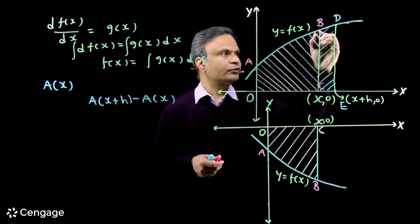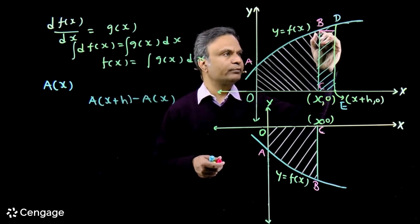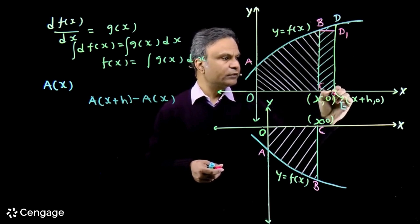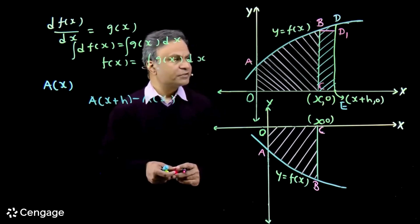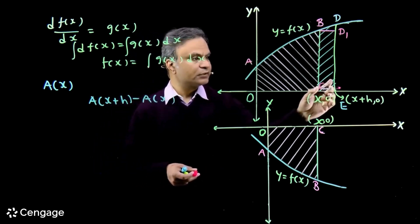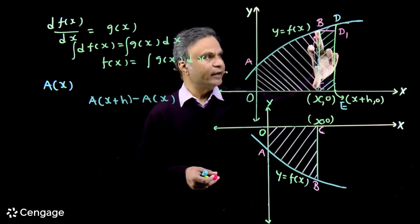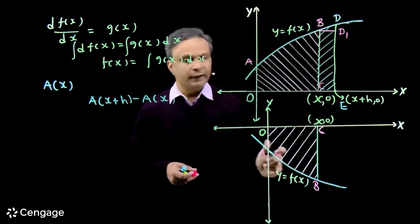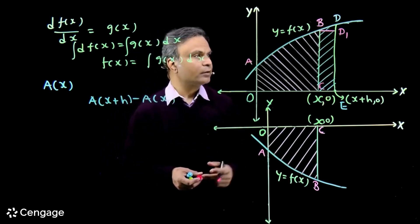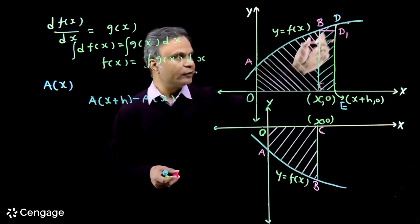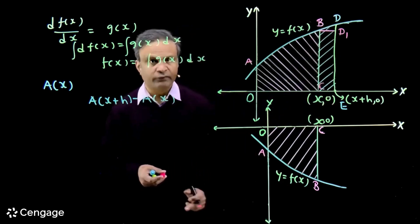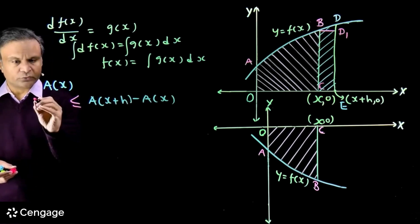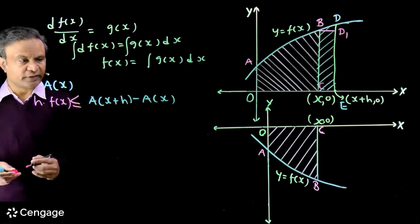From point B we draw a line perpendicular to the x-axis, forming rectangle BD₁EC. The width of this rectangle is h and the height is f(x), so its area is h × f(x). The area of region BDEC is certainly greater than or equal to the area of this inner rectangle. So we have: A(x+h) − A(x) ≥ h × f(x).